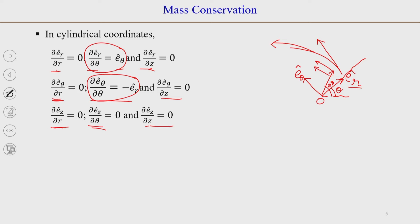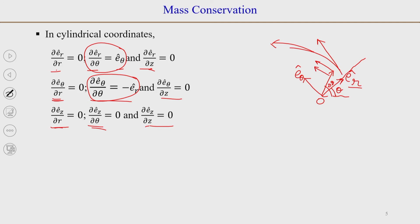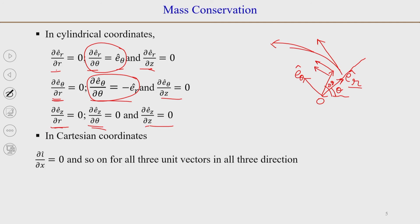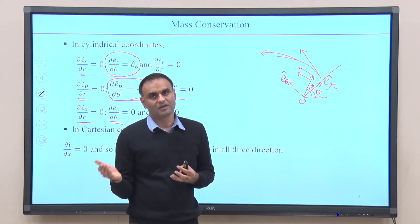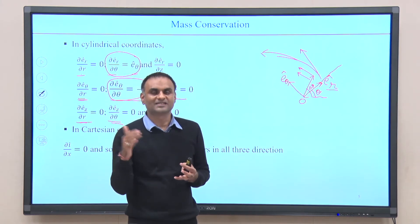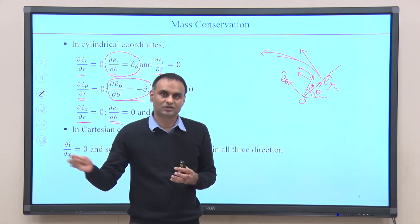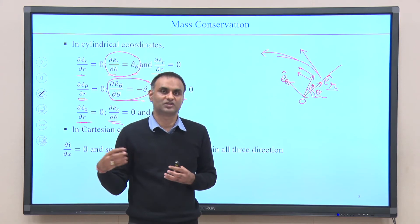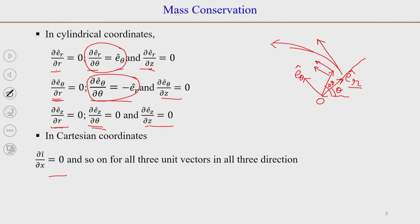In Cartesian coordinates, the directions of unit vectors i, j, k remain unchanged if you change x, y, or z. So dou/dou x, dou/dou y, and dou/dou z of i, j, and k are all 0. This motivates why the del operator expansion differs between coordinate systems.